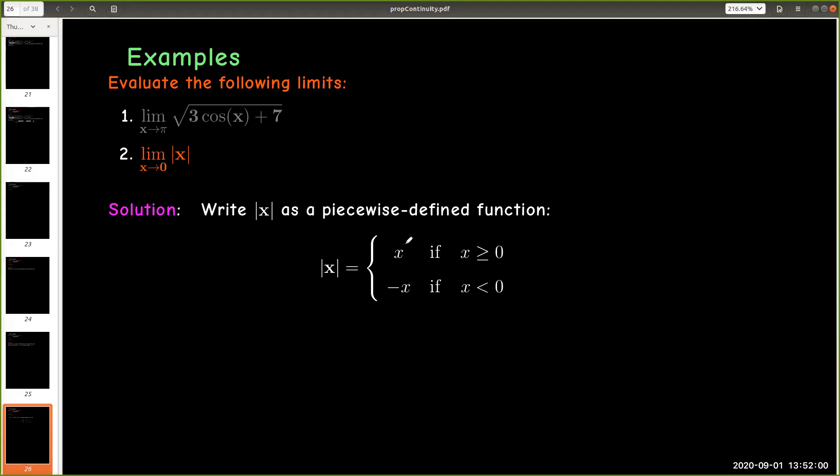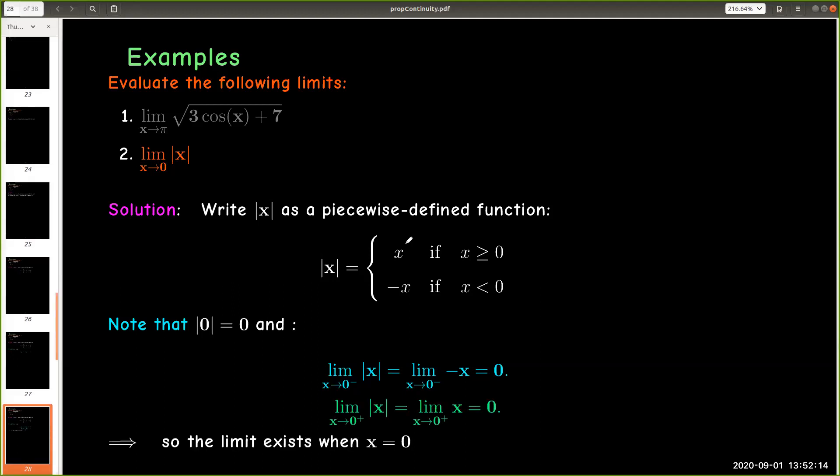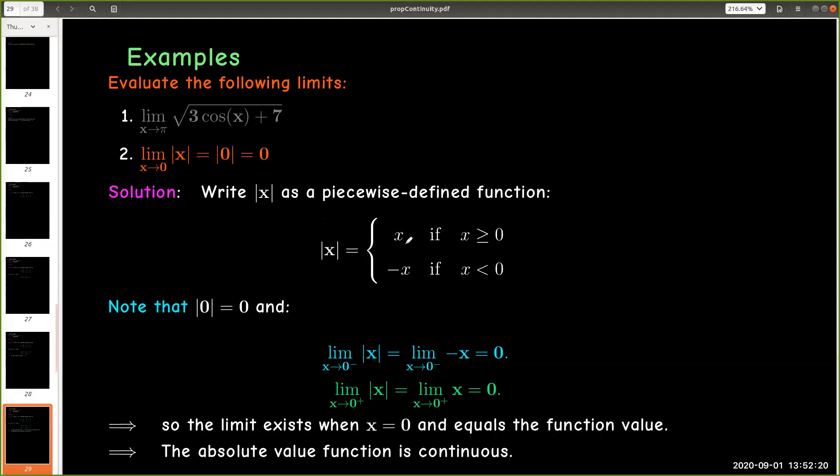So what about 0? Well, the function value itself is 0. And if I take the limit from the left, I get 0. And if I take the limit from the right, I get 0. So the limit exists when x equals 0, and it equals the function value. So the absolute value function is continuous.